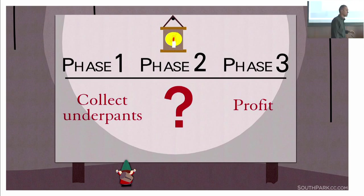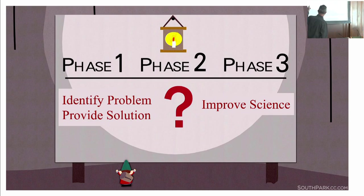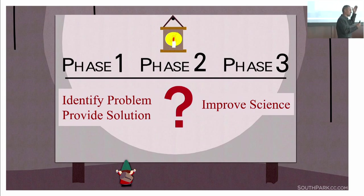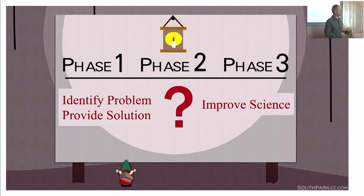The only thing they had not figured out yet was the business plan for how you take the underpants and turn them into profit. Everything else was worked out. The methodologists really are adopting the same strategy: we figured out the problem, we provided the solution, we put it in a paper — so why isn't science better? There are big gaps between writing a paper, which is the academic hammer for every problem, and how it is that we actually implement that in practice.